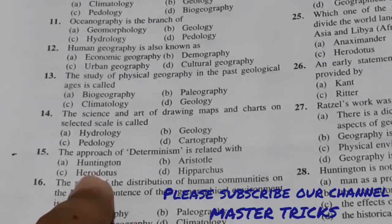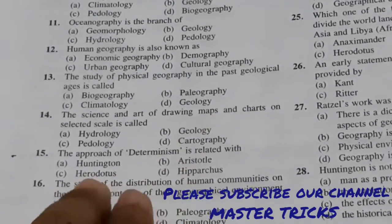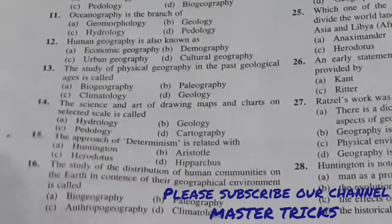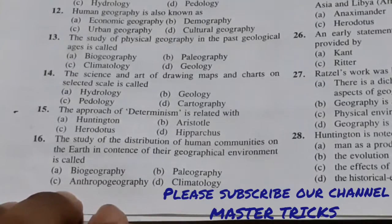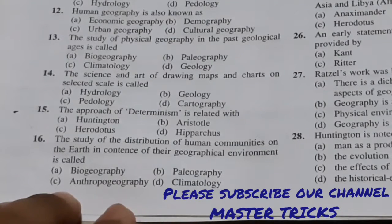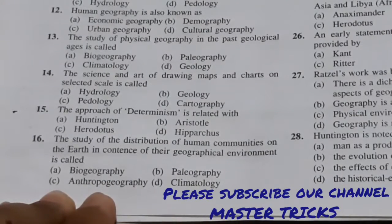Question number 16: The study of the distribution of human communities on the earth in context of their geographical environment. If you have the distribution of human communities on the earth, then you will know anthropo-geography. Anthropo means human — human behavior, distribution, and settlement — then you study anthropo-geography.